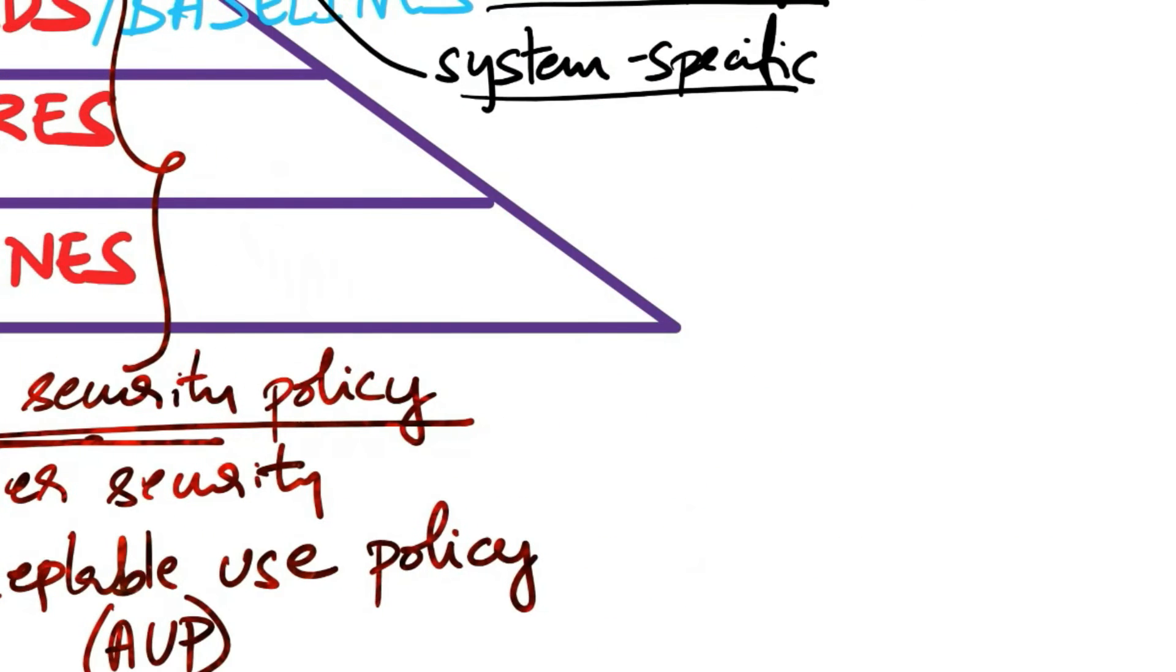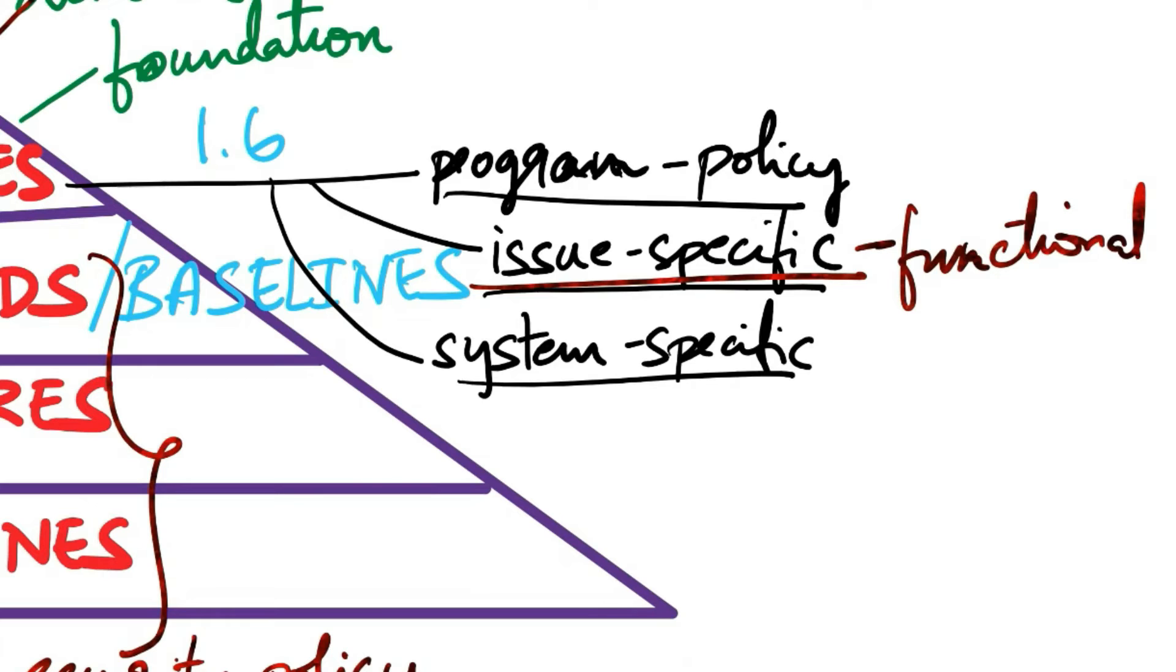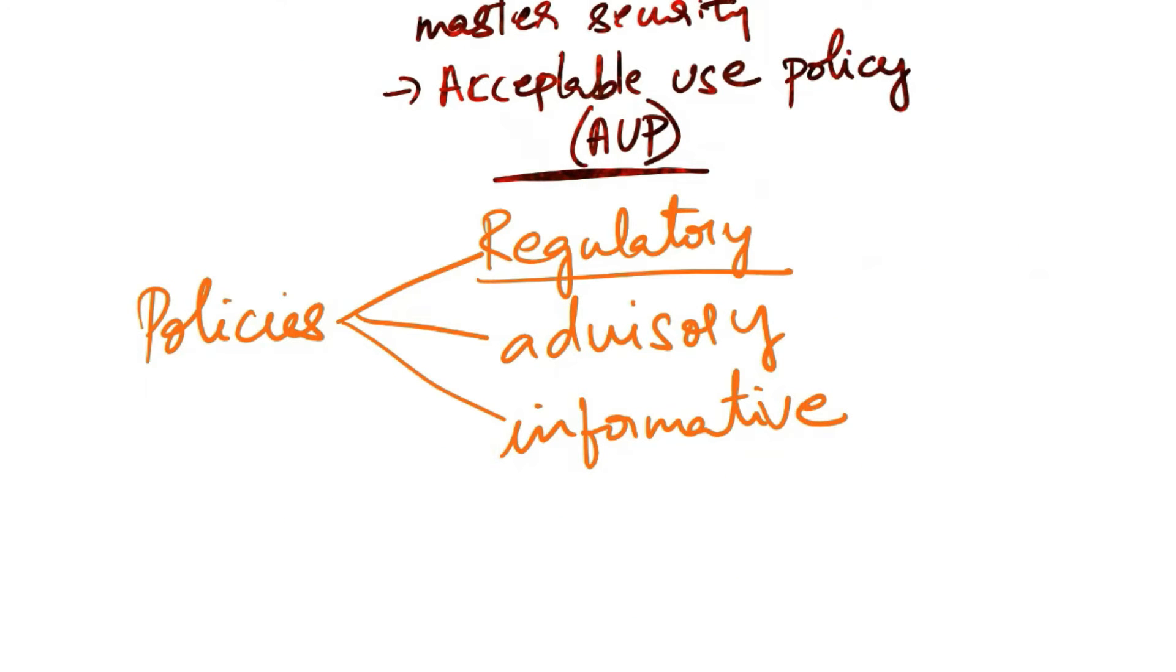Something I forgot to mention is that issue-specific policies are also called functional policies. They address specific security issues in detail. For example, an email security policy outlines acceptable usage and privacy issues related to email. Actually, policies fall under three main categories: regulatory, advisory, and informative. Regulatory policies ensure compliance with industry regulations. Advisory policies strongly advise behaviors and activities. Informative policies provide information without explicit compliance requirements.